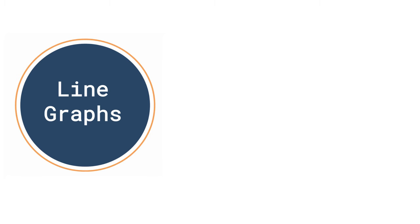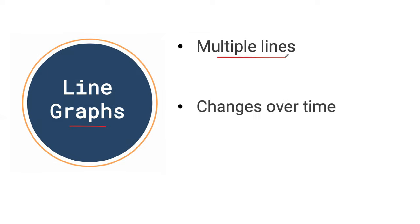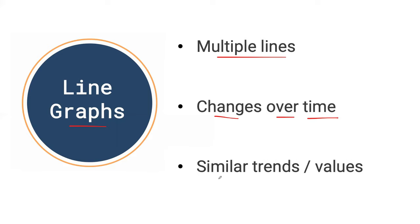First I just want to go over some basic information that comes into play when you have line graph questions. Usually you can expect to see multiple lines, and these lines show changes over time, so you'll most likely see dates. In your writing, you'll need to look at similar trends and values that you'll need to group together. With multiple lines, you could see just two to three lines or groupings of lines, and our two examples today will show those two different scenarios.